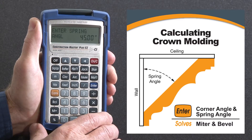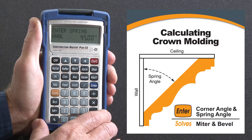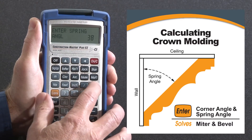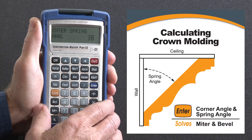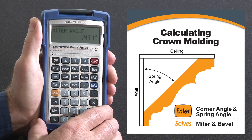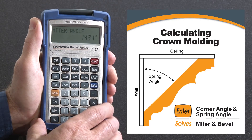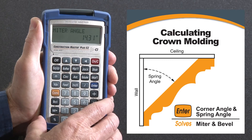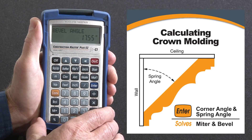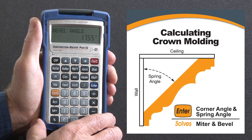And we're going to use a 38-degree spring-angle crown, so 38 — enter there. So our miter angle is going to be 14.31 degrees, and the bevel angle 17.55 degrees.